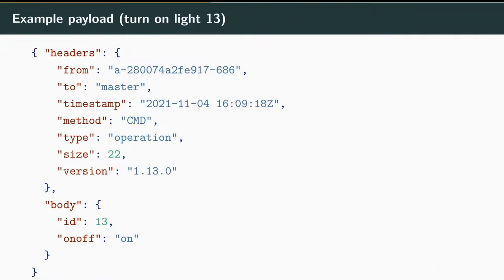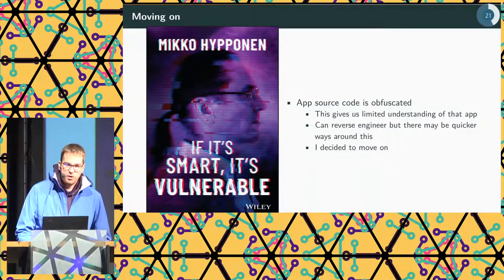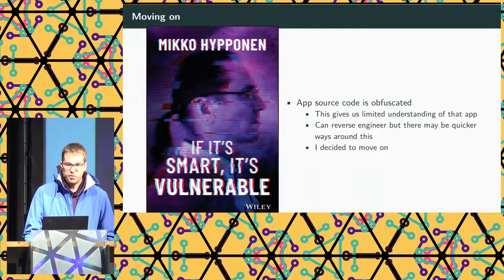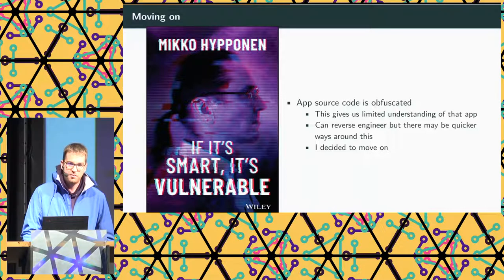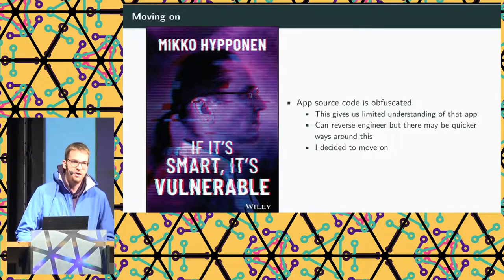For example, when I clicked a button on the app to turn on a light, it just sends a payload where the body says 'turn on asset number 13,' and 13 was a light. I also tried to decompile the app source code, but it was obfuscated. As one famous security researcher who did the keynote yesterday said: if it's smart, it's vulnerable. So I decided to move on.